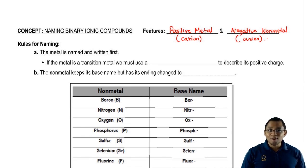We're going to say that the metal is named and written first. But if that metal happens to be a transition metal, remember transition metals have more than one charge. So it's important for us to determine which one of the ions we're talking about. For example, we could have cobalt plus one or cobalt plus two.